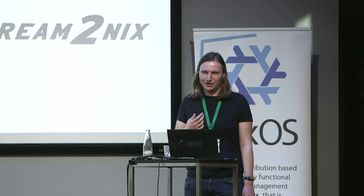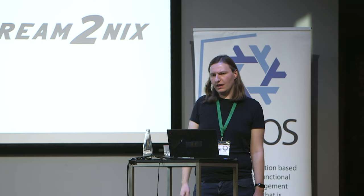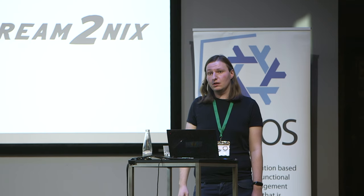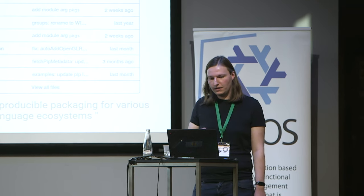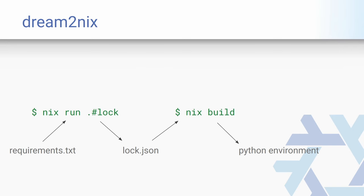The documentation is quite good. Sometimes it changes — that's what unstable software means — but I can live with that. It uses the same module system as NixOS. It is a way to automate reproducible packaging for various language ecosystems. It lives in a GitHub repository on the Nix community. For all of the supported languages, it has a way to generate lock files, and then from those lock files run a Nix build.